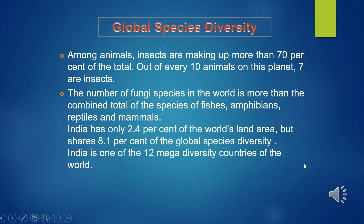Among animals, insects are the most species-rich taxonomic group, making up more than 70% of the total animal species. The number of fungi species in the world is more than the combined total of species of fishes, amphibians, reptiles, and mammals.